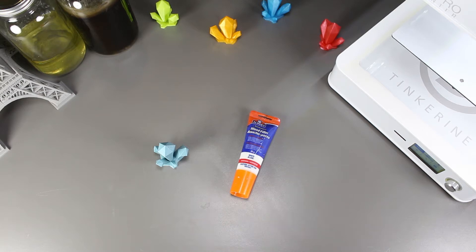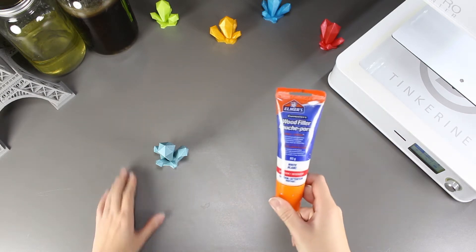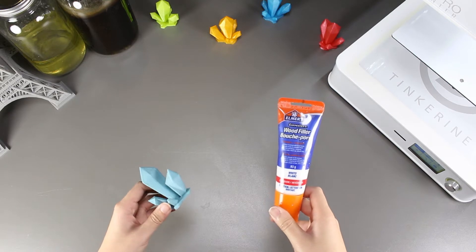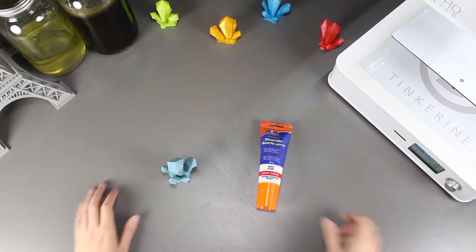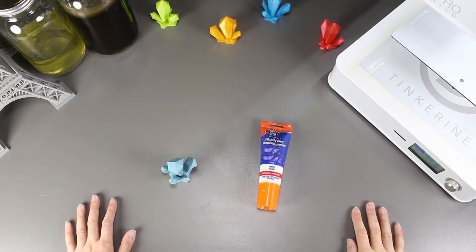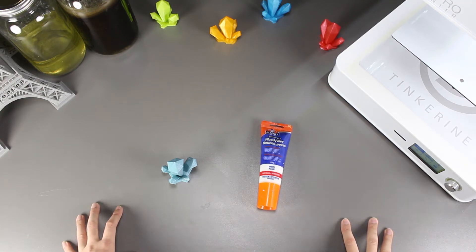Welcome to another episode of Tinkerine Experiments. Today we are going to try post-processing our 3D printed PLA model with wood filler. I found this in the warehouse and always wanted to try it out, hoping that it would fill up the lines and smooth out our PLA. We'll find out today.